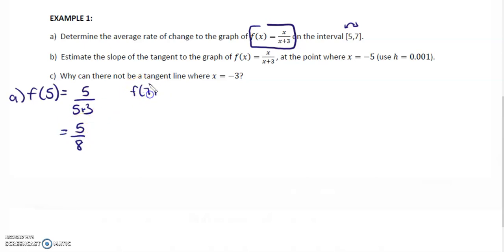Then we find f at 7, which is 7 over 7 plus 3, which is 7 over 10. Now we find the average rate of change. So we have the point 5 comma 5 over 8, and 7 comma 7 over 10.